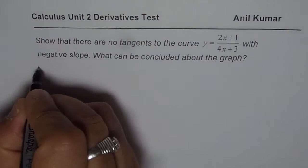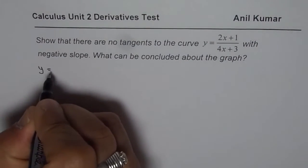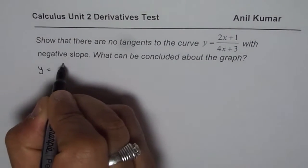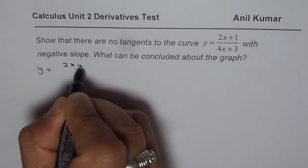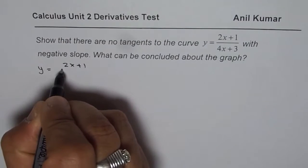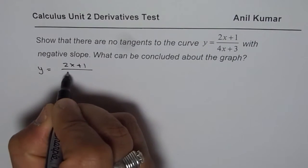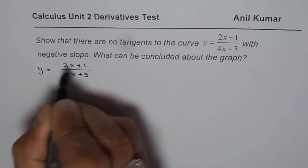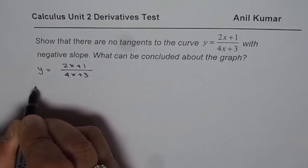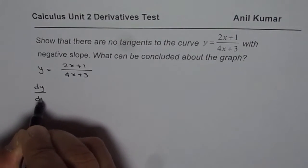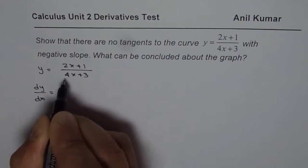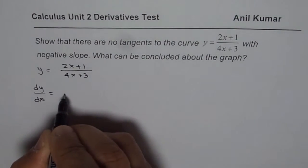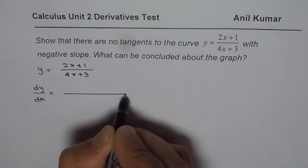We have the function y equals 2x plus 1 over 4x plus 3. Let us find the derivative, that means dy/dx of the function. We will apply the quotient rule.